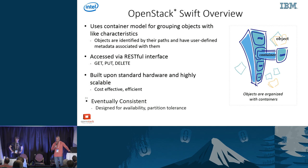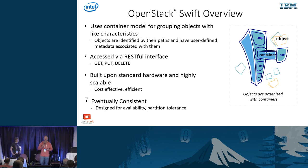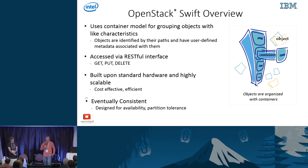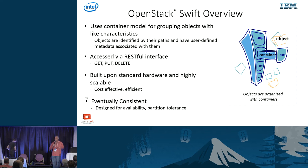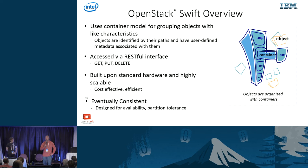A couple of high-level bullets on Swift. Obviously it's an object storage system. We use a container model, very much like S3 buckets, to group things together for like characteristics — easiest one to grasp is ACLs, securities. Storage policies is a big one added a year before last. Everything is through a stateless RESTful interface, very easy to use, very strong API. Lots of other storage systems have layers built on top to support Swift — we've sort of become a de facto standard.